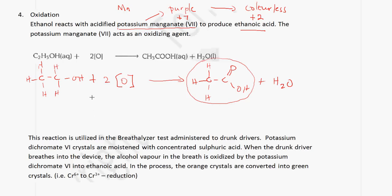Ethanol also reacts with acidified potassium dichromate(VI), which is K2Cr2O7, and the reaction will be very similar. Potassium dichromate(VI) is used in the breathalyzer test. The crystals are moistened with concentrated sulfuric acid, and when a drunk driver breathes into the device, the alcohol vapor in the breath is oxidized by the potassium dichromate(VI) into ethanoic acid. In this case, the color is usually orange, and when it reacts with the alcohol, it changes to green.